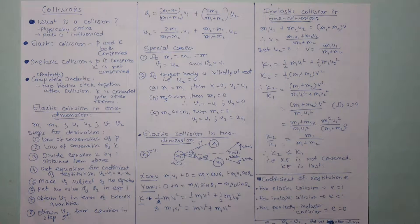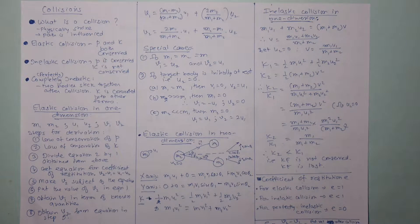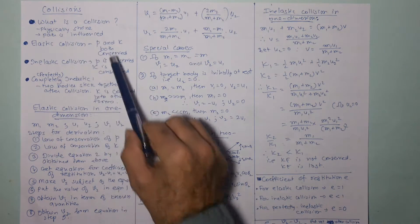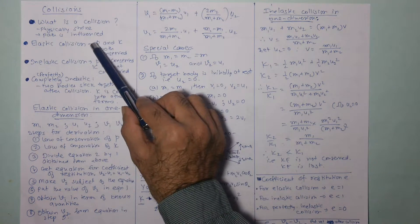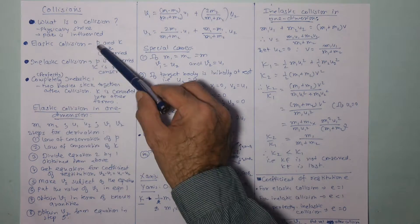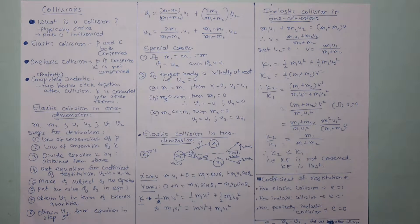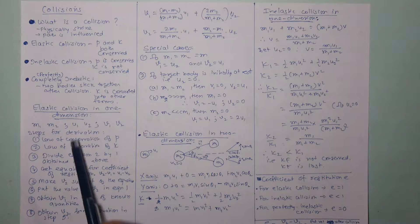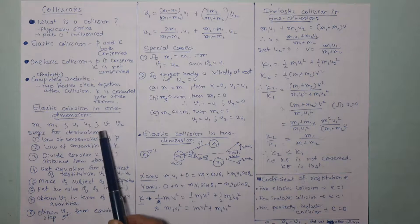We will study these three types of collision. Beginning with elastic collision in one dimension — both kinetic energy and momentum are conserved. We take two objects with mass M1 and M2, with initial velocities U1 and U2, and final velocities V1 and V2.